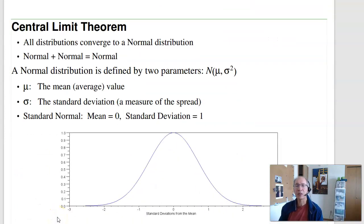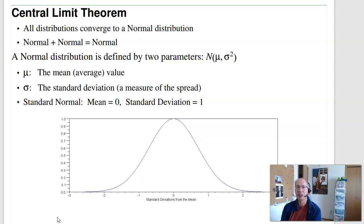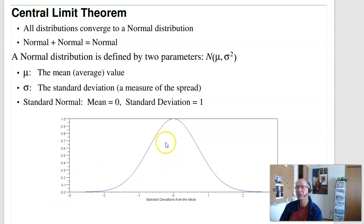The basis of all the t-test is the central limit theorem, which says that anything you measure typically converges to a normal distribution, and a normal plus normal is normal. The two parameters you need to define a normal distribution are the mean and standard deviation. A normal distribution looks like your normal bell-shaped curve — grades, height, weight, things like that follow a normal distribution. This is a normal distribution with a mean of zero and a standard deviation of one, called a standard normal curve.